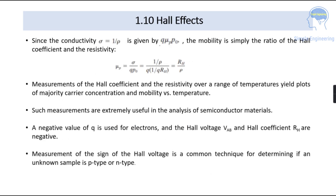Since the conductivity σ is equal to 1 by ρ that is given as q·μp·p0 the mobility that is simply the ratio of Hall coefficient and resistivity. So we can take μp is equal to σ by q·p0 which is equal to σ that we have taken in terms of resistivity 1 by ρ by q into p0 we can write in terms of Hall coefficient. So it will be Rh by ρ. So the measurements of the Hall coefficient and the resistivity over a range of temperatures that yield the plot of majority carrier concentration and the mobility in terms of temperature.